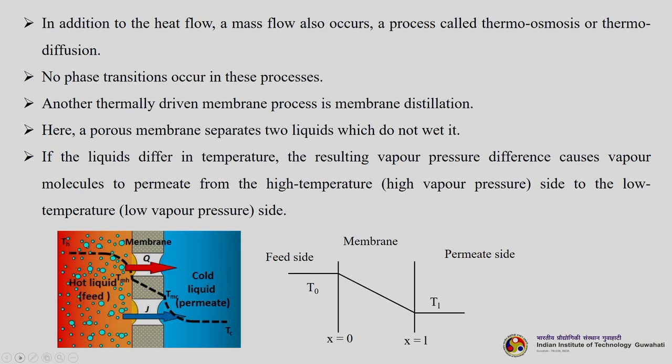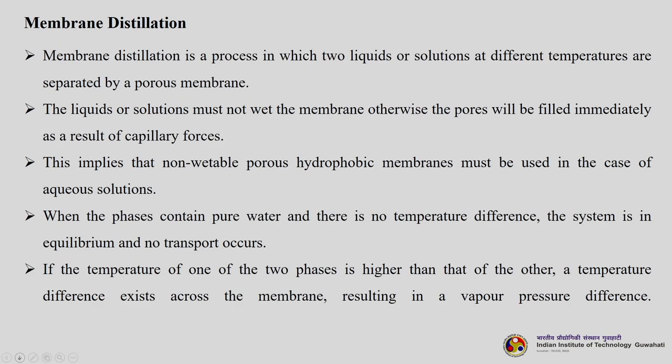In membrane distillation, a porous membrane separates two liquids which do not wet it. If the liquids differ in temperature, the resulting vapor pressure difference causes vapor molecules to permeate from the high temperature side to the lower temperature side — from high vapor pressure to lower vapor pressure — as seen in this schematic. The feed side temperature is T_naught and permeate side is T_1, where T_naught is greater than or equal to T_1. The two liquids must not wet the membrane; otherwise pores will be filled immediately due to capillary forces, affecting the separation.